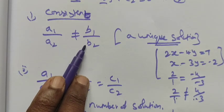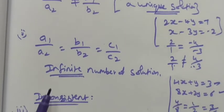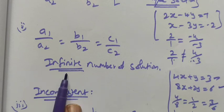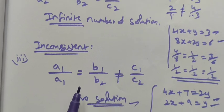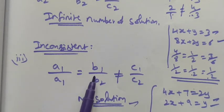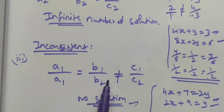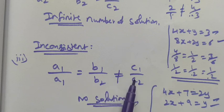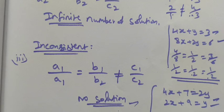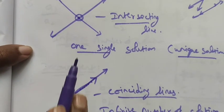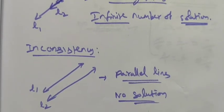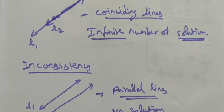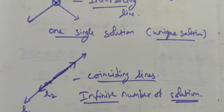In summary: For consistency, if a1/a2 ≠ b1/b2, we have a unique solution. If all ratios are equal, we have infinitely many solutions. For inconsistency, if the ratio of coefficients of x and y are equal but the constant ratio is not equal, we have no solution. Graphically: intersecting lines give one solution, coinciding lines give many solutions, and parallel lines give no solution. Thank you, students.